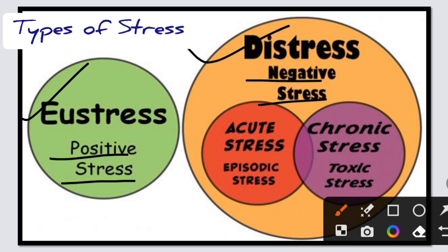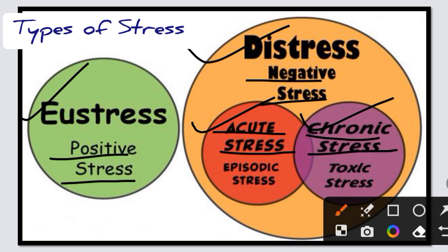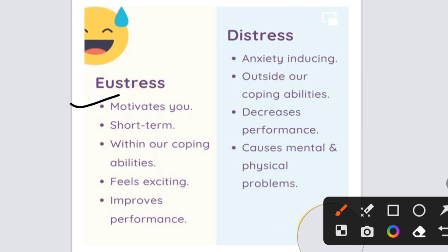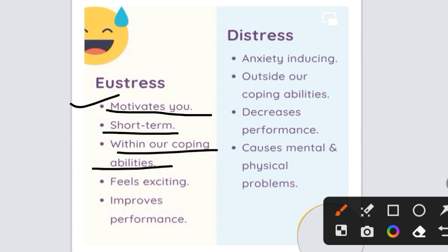If we talk about negative stress, there are two types: one is acute stress and the other is chronic stress. Acute stress lasts for a short time, but when acute stress becomes very long term, it is chronic stress, which is toxic. Eustress is what motivates us — it is positive for us, short term, within our coping abilities. We feel excitement and it improves our performance.